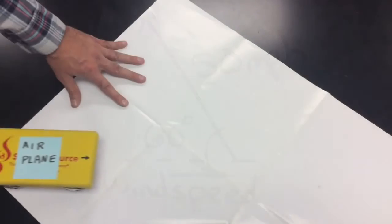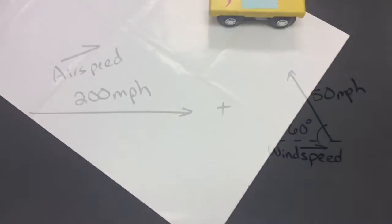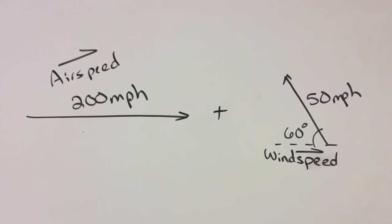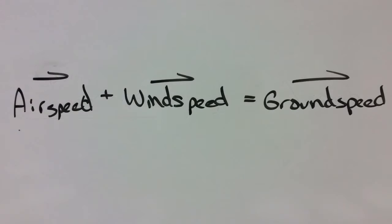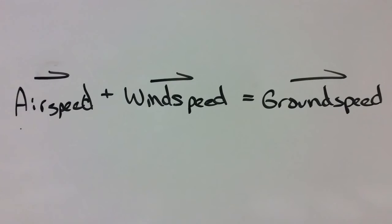Now we will put those two together and see what the plane is doing with respect to the black ground beneath it, combining the 200 mile an hour airspeed and the 50 mile an hour windspeed to get the ground speed. That's a vector equation right there: airspeed plus windspeed equals ground speed.